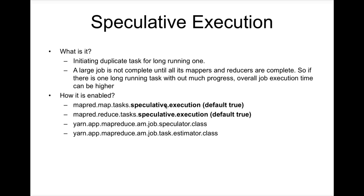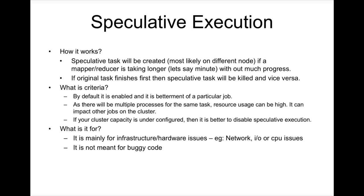These are the parameters that control speculative execution. A speculative task to process the same block of data will be created if a mapper or reducer is taking longer without much progress. If the original task finishes first, the speculative task will be killed. If the speculative task finishes first, the original task will be killed. Only one task output will be preserved — whichever finishes first, that task's output is kept and the other is killed.